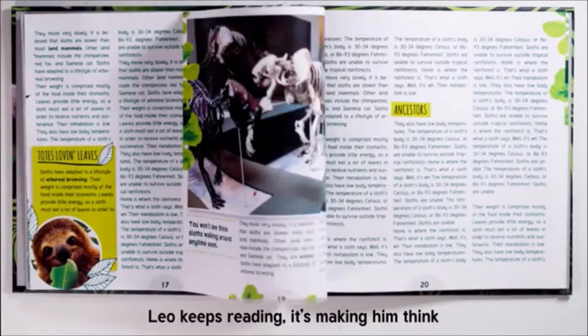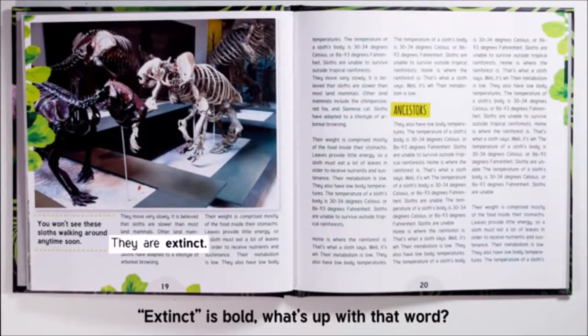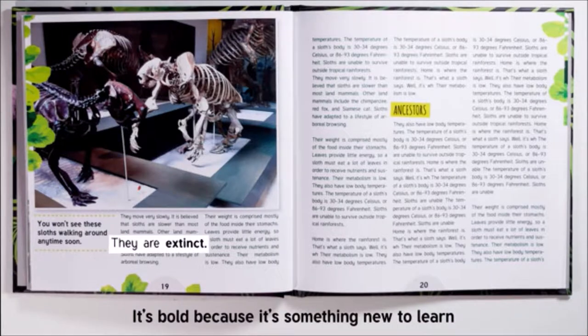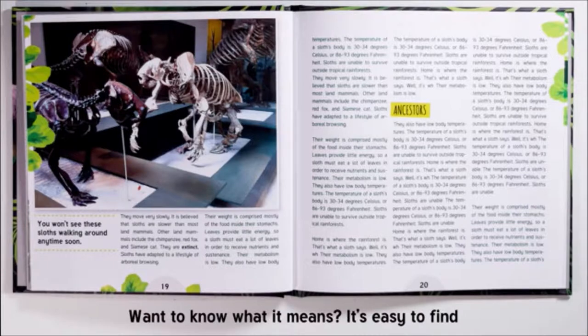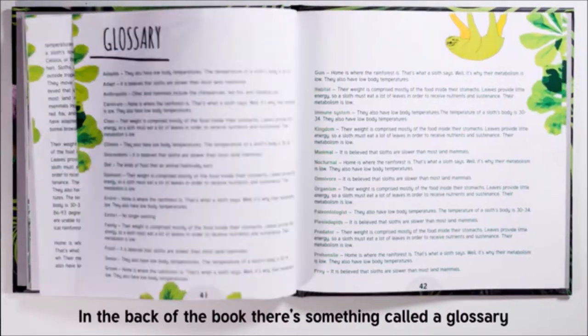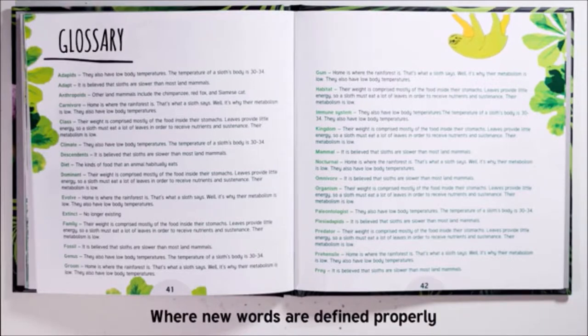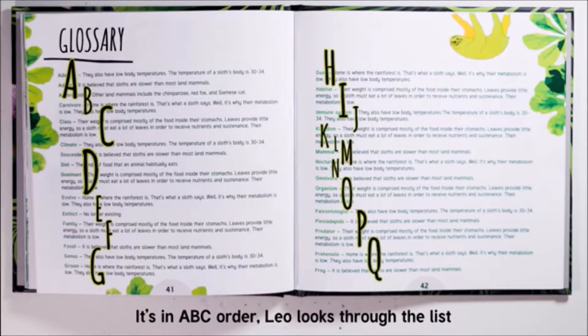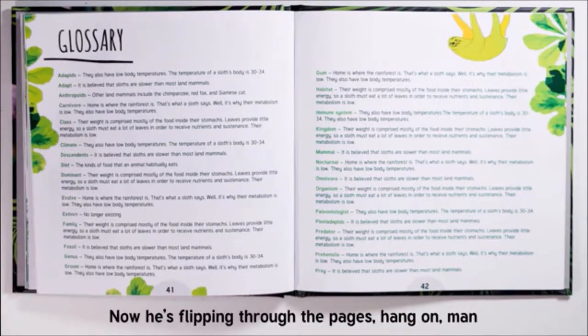Leo keeps reading. He sees that some species of sloths are extinct. Extinct is bold. It's bold because it's something new to learn. It could be italicized or underlined. Want to know what it means? It's easy to find. In the back of the book there's something called a glossary where new words are defined properly. It's in ABC order. Leo looks through the list. He sees extinct means it no longer exists.